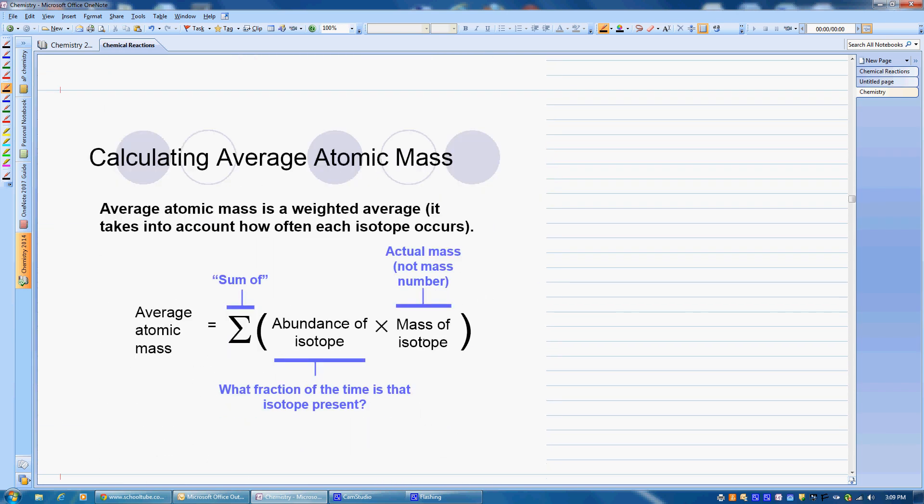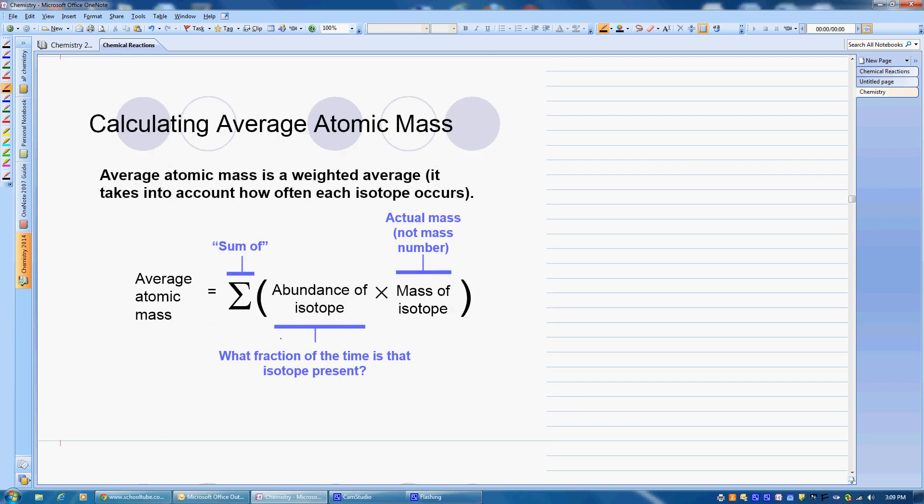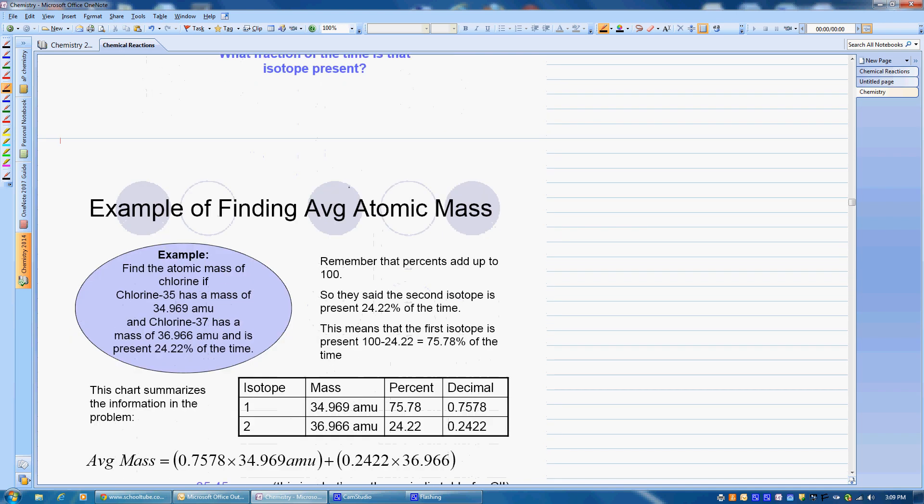Okay, so how do we do this? This is our formula that we use. It's the sum of the abundance of our isotopes. So that's pretty much the percentage of the isotope times the mass of that isotope. So this is a weighted average. It's not just an average. It's a weighted average. And there's a difference there because we're taking into account the percent of each that we have. We're not saying that they're all equal.